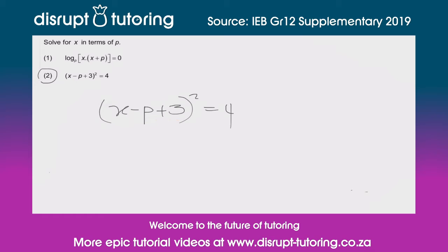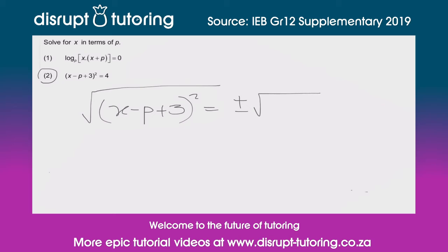So x is going to equal some sort of function of p. The first thing I want to do is get rid of the square, so I'm going to square root both sides. I'll give myself a little bit of space when I introduce the square roots. On the right-hand side, it must be plus or minus — so plus or minus the square root of 4.